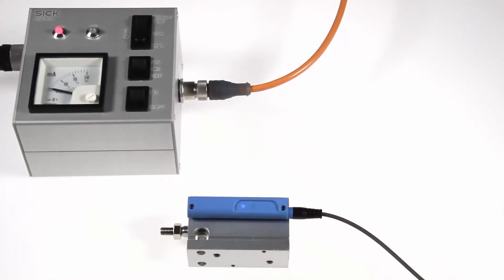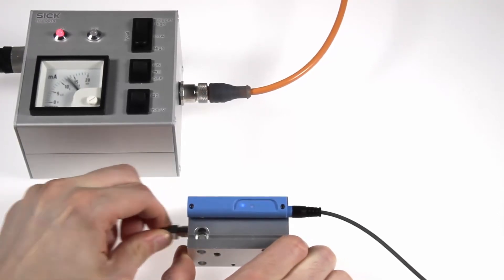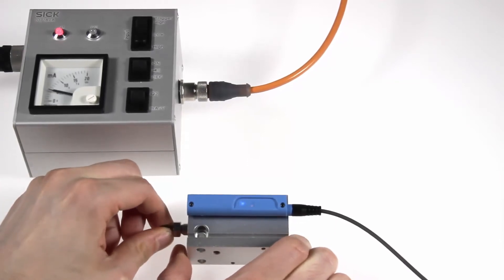When the sensor is powered up and the outputs are connected to an ampere meter, the precise piston position is represented by the analog output. The yellow LED shows that a magnetic field is registered in range.